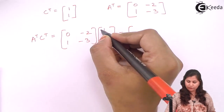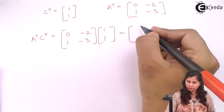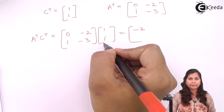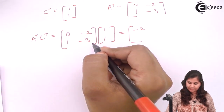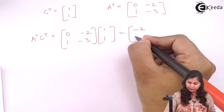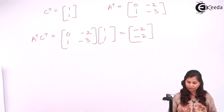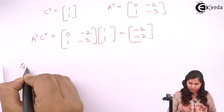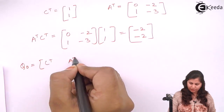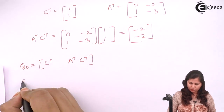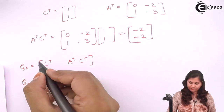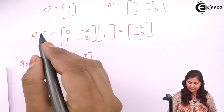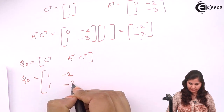Calculating AᵀCᵀ: 0×1 + (-2)×1 = -2, and 1×1 + (-3)×1 = -2. So AᵀCᵀ = [-2, -2]. Therefore Q₀ equals [Cᵀ | AᵀCᵀ], with the first column being [1, 1] and the second column being [-2, -2].